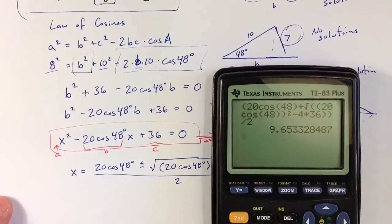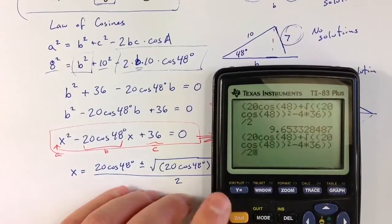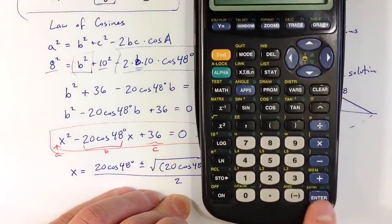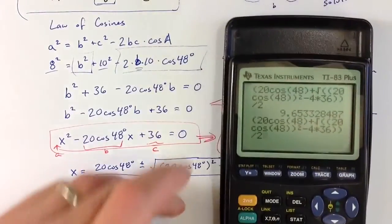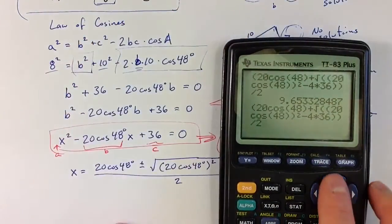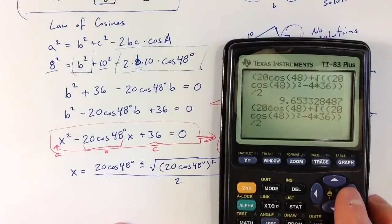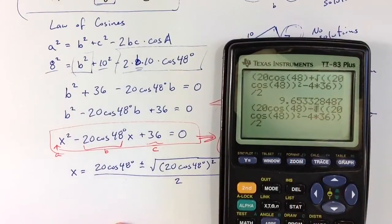And hitting enter gives us a side length, and that is one of our possible values for b. The other possible value comes from taking that same expression, and I brought that expression back onto my calculator by using the entry command, which is the second command above enter, so I don't need to retype all of that. I can bring it back onto the screen and then change the plus sign here to a minus to get that other solution.